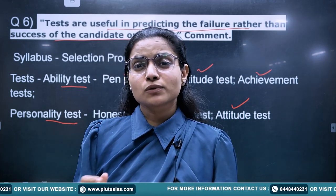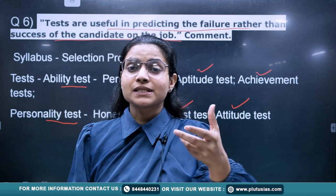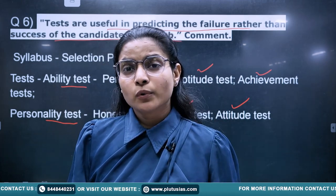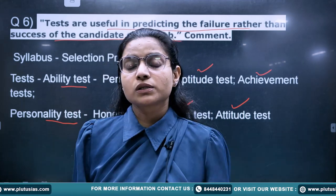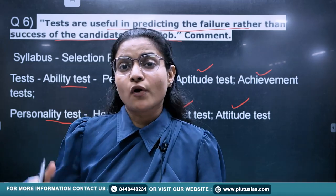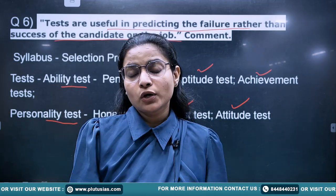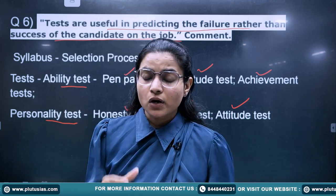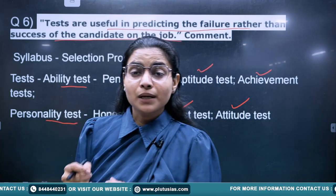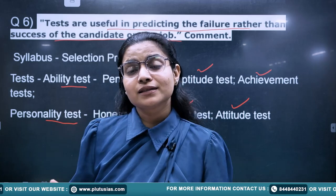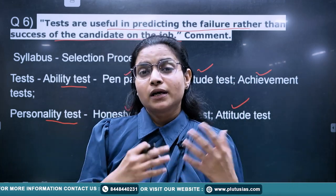The question asks how selection tests predict failure rather than success. In the selection process, it is more about elimination than selection — you are testing whether a person reflects a certain behavior or not. There is also a reliability problem: a person may not perform or behave in the same manner during the selection test as they would on the job.